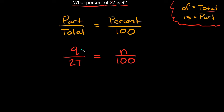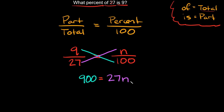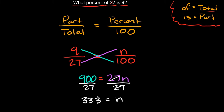Now that the proportion is set up, cross multiply: 9 times 100 equals 900, and that equals 27 times n, or 27n. To solve for n, divide by 27 on both sides — these cancel out, leaving n equal to 900 divided by 27, which equals 33.3 repeating. So 'What percent of 27 is 9?' — the answer is 33.3 repeating percent.